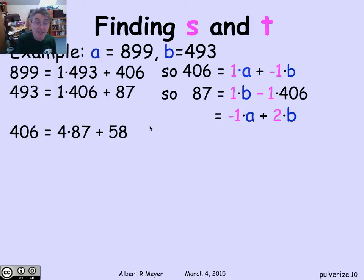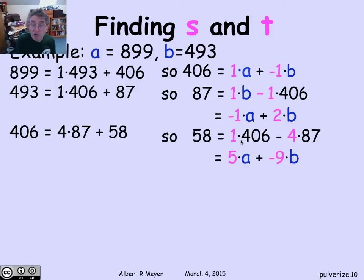Let's continue. After this, what we're supposed to do is find the quotient of 406 by 87 and the remainder. So when you divide 406 by 87, you get a quotient of 4 and a remainder of 58, which means the remainder 58 is 406 minus 4 times 87. But now, looking above, I have the coefficients of 406 for a and b, and I have the coefficients for 87 for a and b. So I wind up that the way to express 58 in terms of a and b is it's 5a plus minus 9b.